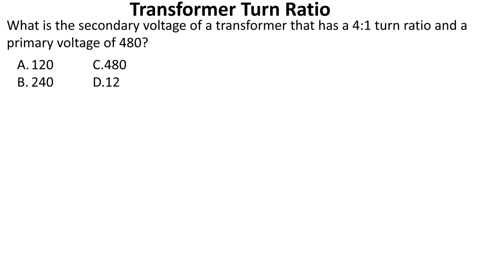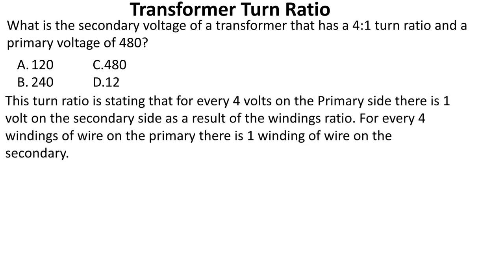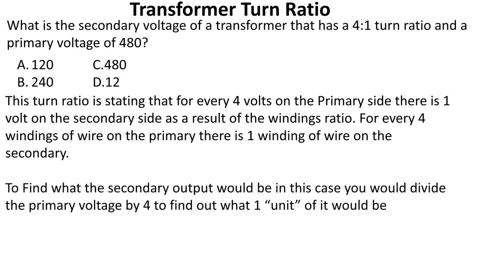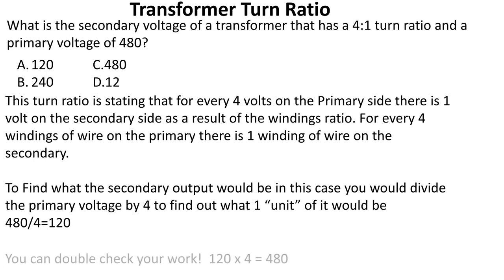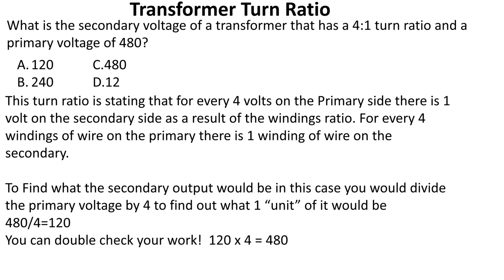What is the secondary voltage of a transformer that has a four-to-one turn ratio and a primary voltage of 480? This turn ratio states that for every four volts on the primary side there is one volt on the secondary side, as a result of the windings ratio — for every four windings of wire on the primary there is one winding on the secondary. To find the secondary output, divide the primary voltage by four to find what one unit would be: 480 divided by four gives you 120.